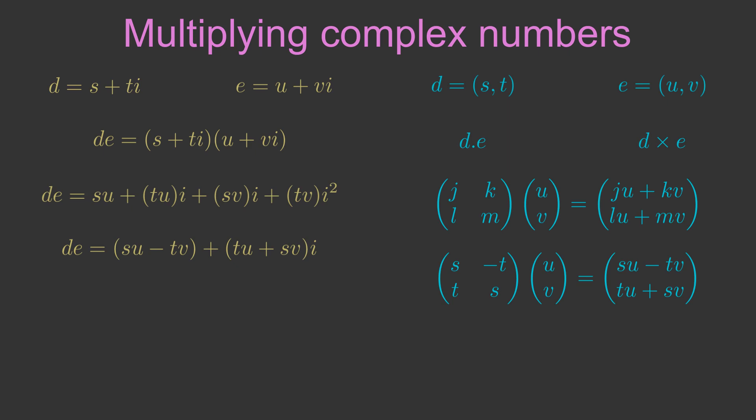To be clear, this works because we have specifically chosen the matrix elements to make it work. This tells us that there is a relationship between complex number multiplication and vector multiplication. If we multiply two complex numbers d and e, we get the same result as if we pre-multiply the vector e by a special matrix containing the values in d.